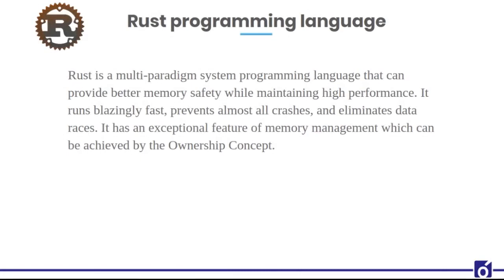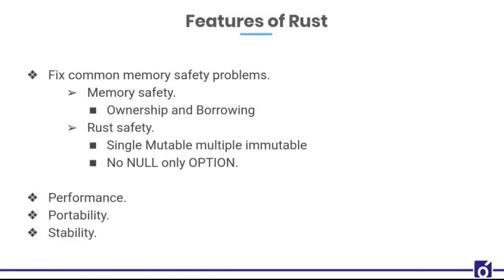Starting from Rust. Rust is a multi-paradigm system programming language that can provide better memory safety while maintaining high performance. It runs blazingly fast, prevents almost all crashes and eliminates data races. It has an exceptional feature of memory management achieved by the ownership concept. Key features of Rust include fixing common memory safety problems, with ownership and borrowing guaranteeing memory safety.